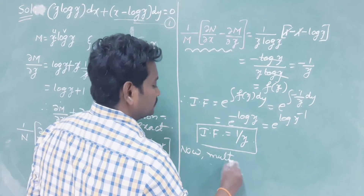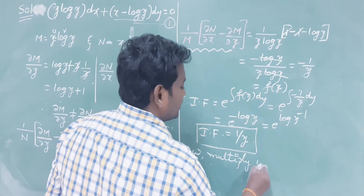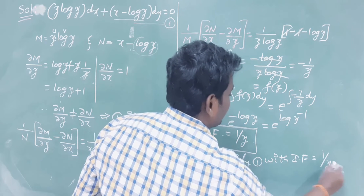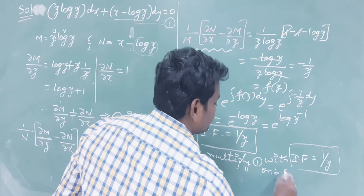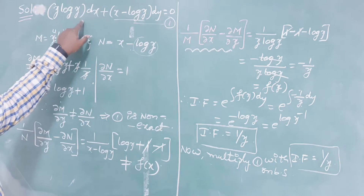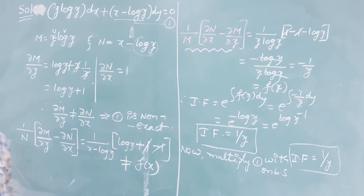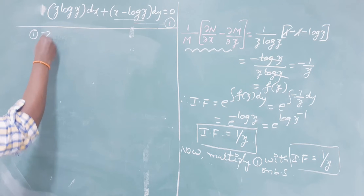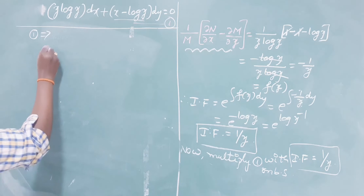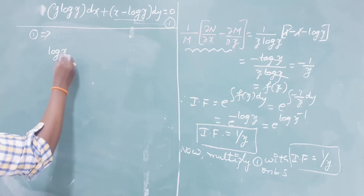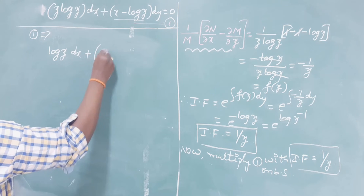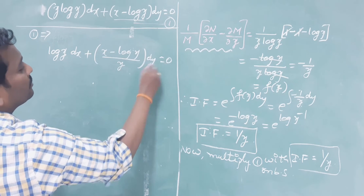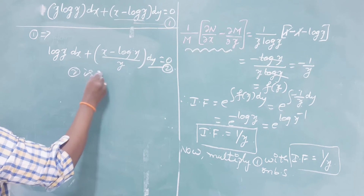Multiply equation 1 by the integrating factor 1/y on both sides. The term y·log(y) divided by y gives log(y), and (x - log y)/y remains. The new equation is: log(y) dx + (x/y - log(y)/y) dy = 0. This new equation is now exact.